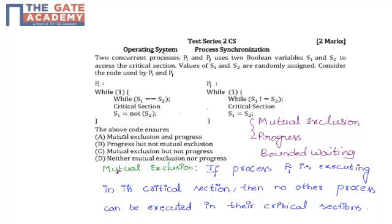If process PI is executing in its critical section, then no other process can execute in their critical section. That means at any given time, only one process will be executing in its critical section.